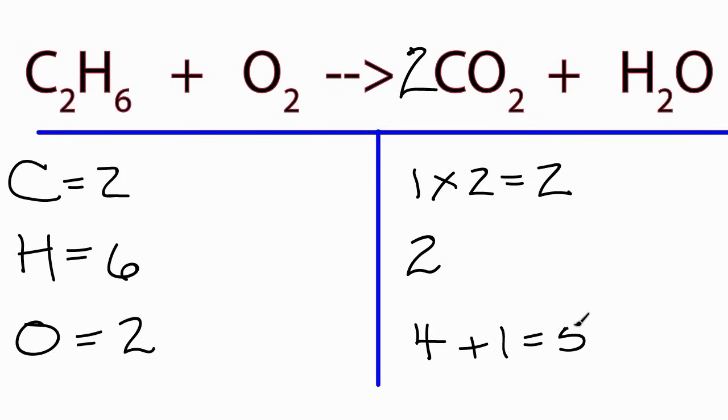I need six hydrogens on both sides. So two times three, that'll give me six. So let's put a three here, two times that three. Now we have six hydrogens. That's balanced.